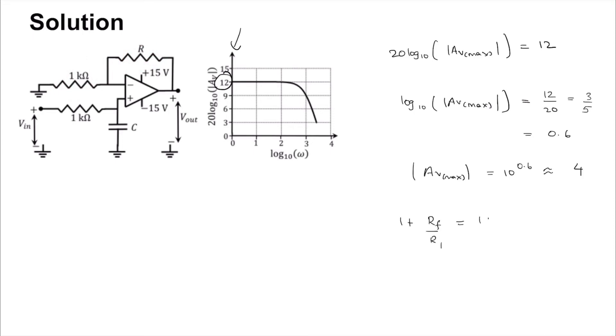So this is 1 plus R by 1 kilo is 4, which implies that R is equal to 3 kilo ohm.